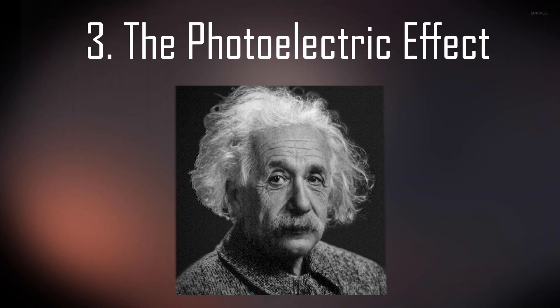3. The photoelectric effect. When light falls on a plate of metal, it can kick out electrons from their orbits around atomic nuclei. This is called the photoelectric effect.